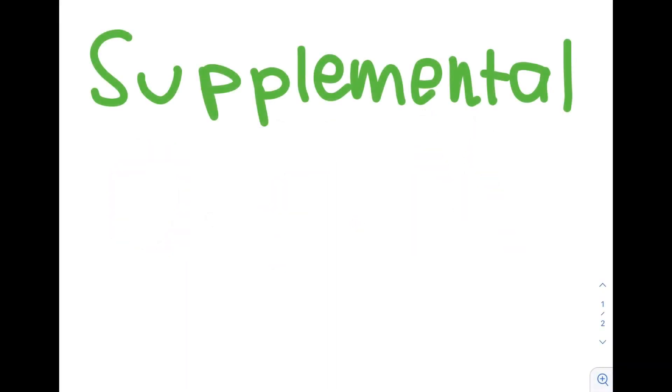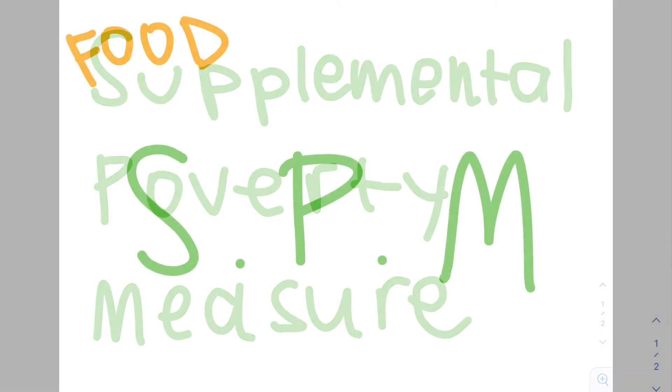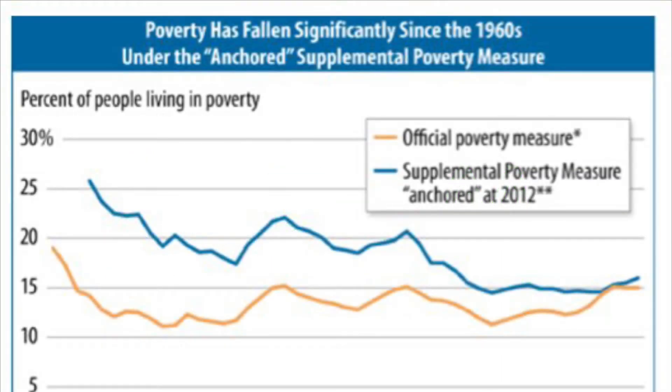Because researchers found the OPM too vague, the Supplemental Poverty Measure, or SPM, was born. Like the OPM, it covers food, clothing, shelter, and utilities, but it also accounts for cash income, food programs like SNAP, energy assistance, housing subsidies, FICA, and Social Security. It also accounts for non-discretionary spending including taxes, health care, and child care. Additionally, the SPM accounts for all people in a household and the geographic locations of families.